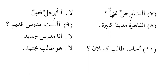'Al-Qahiratu madinatun kabiratun' — Cairo is a big city. We can see that madinatun is feminine, so the adjective must also be feminine. Therefore we say al-Qahiratu madinatun kabiratun.